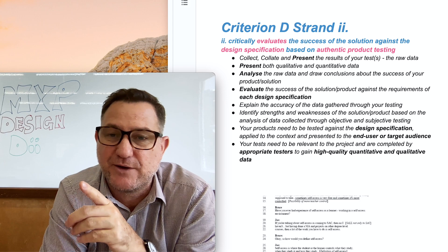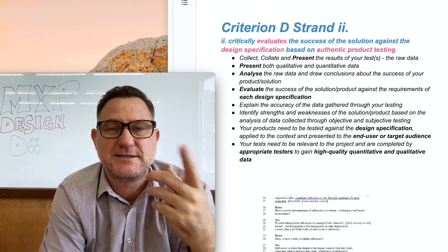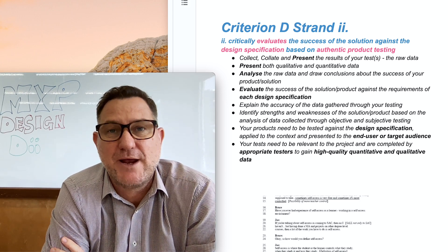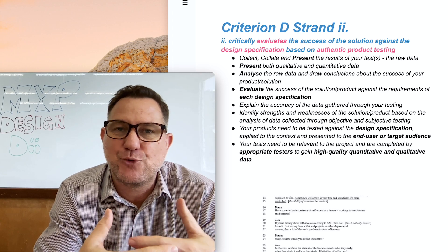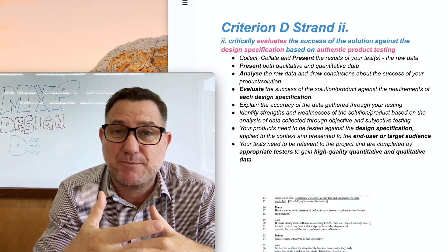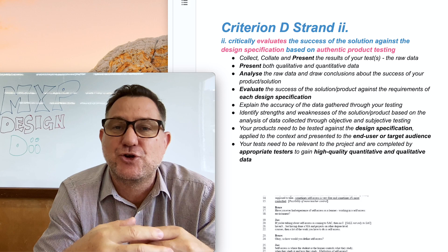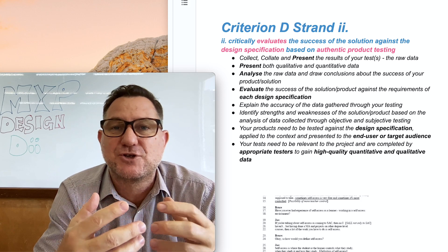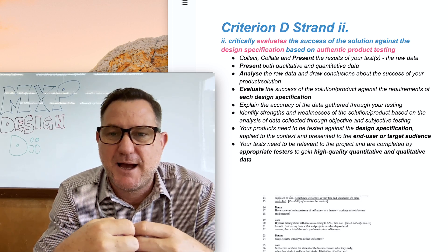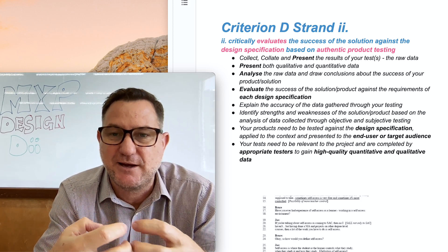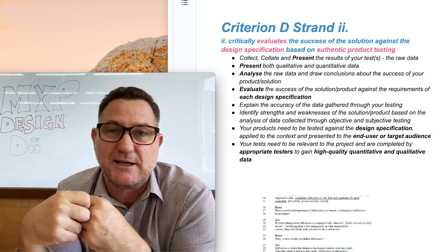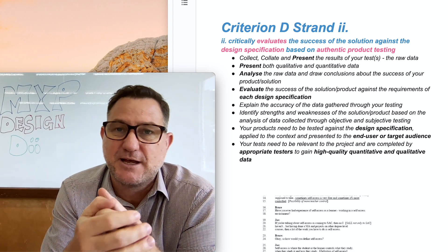Let's start with authentic product testing. This links back to Strand 1, where you shared how you're actually going to do your testing. For top marks in Strand 1 you need more than one test or more than one type of test. In Strand 2 you're basically sharing the results of those tests.